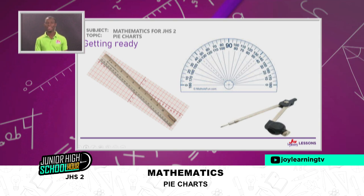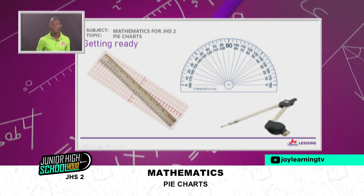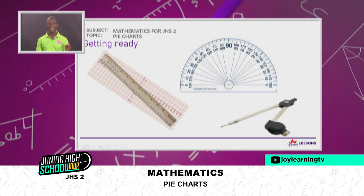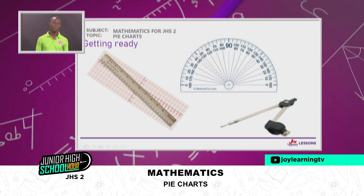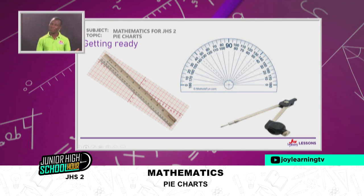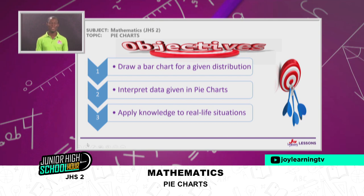For the things that we need, I urge you to go get all of these: pick a ruler, pick a protractor, pick a pair of compass and a pencil and a pen, and a notepad, a notebook or something to work from. As we get these things ready, we'll go through some activities to see how we can achieve our objectives.